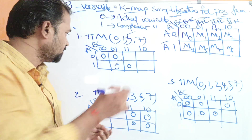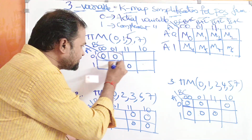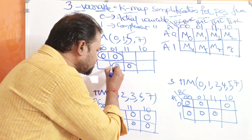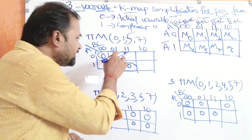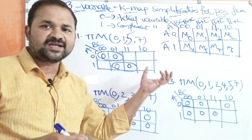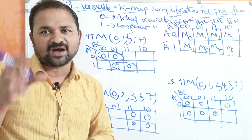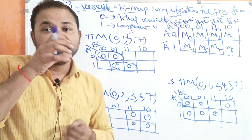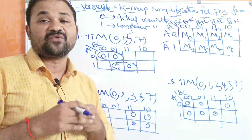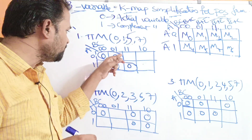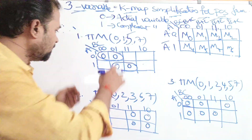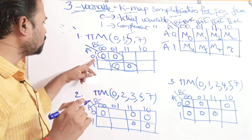Now we perform the grouping. Groups must be in the form of powers of 2. We can make these two adjacent cells one group, and these two adjacent cells another group. There is no need to make the remaining two adjacent cells a third group because all the zeros are already covered. Our target is to have minimum number of max terms where each max term produces fewer literals.